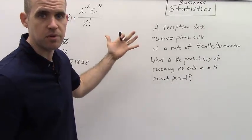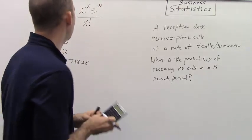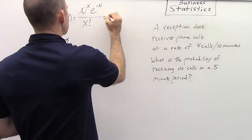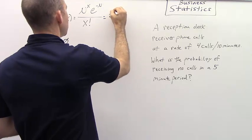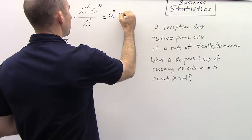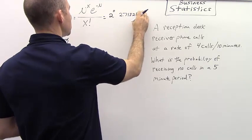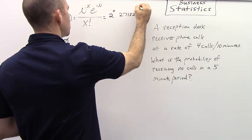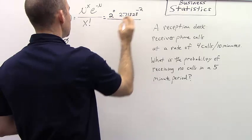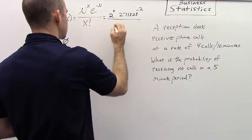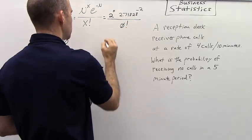Now, we just simply plug and chug. All right, so we've got two raised to the X, and then we're multiplying that by the 2.71828, and then that is raised to the negative two, our negative mean, and then we take X factorial, which is zero factorial.